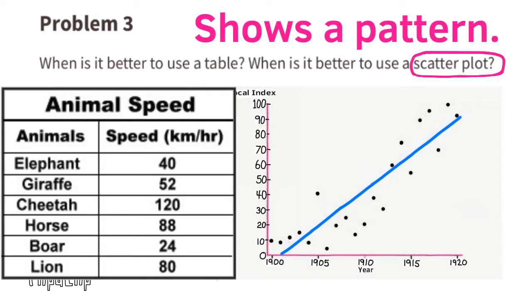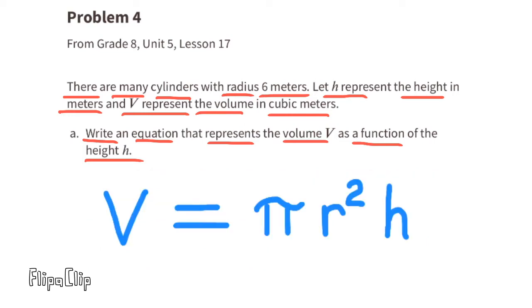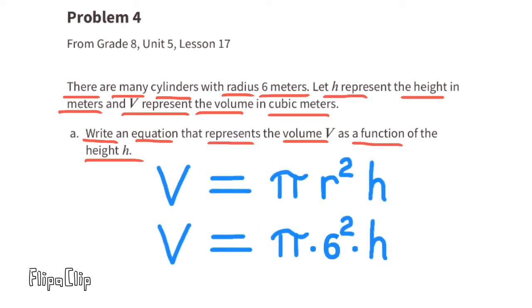Let's look at this scatter plot. You can see that there's kind of a pattern. The dots are hovering along that line, they're very close to that line, and that shows a pattern. Problem number 4, from 8th grade Unit 5, Lesson 17: There are many cylinders with radius 6 meters. Let h represent the height in meters and V represent the volume in cubic meters. Write an equation that represents the volume V as a function of the height h. The volume as a function of the height means that V, the volume, depends on the height of the cylinder times pi times the radius of the cylinder squared.